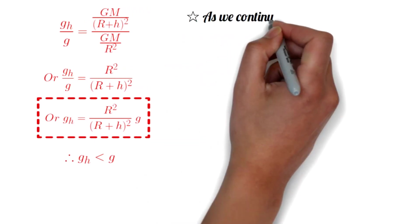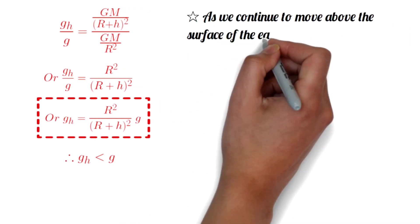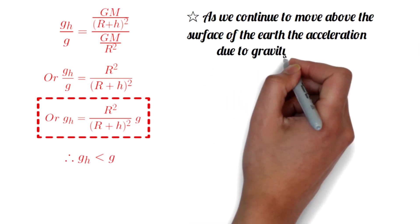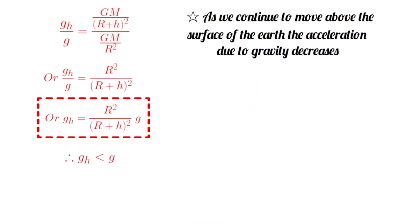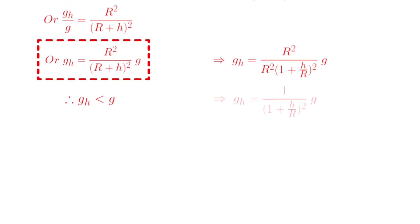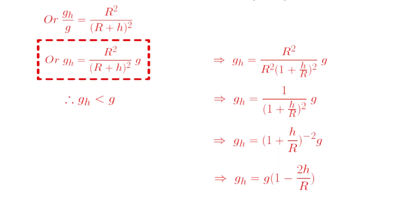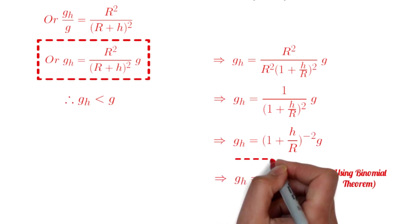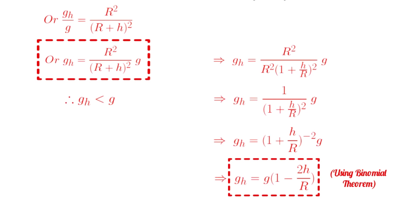This relation clearly shows that g_h is less than g. This means that as we continue to move above the surface of the Earth, the acceleration due to gravity decreases. Now, g_h is equal to R square divided by R square into (1 plus h by R) whole square into g. By solving this equation we get g_h is equal to g into (1 minus 2h by R). This is the formula for variation in acceleration due to gravity with heights.